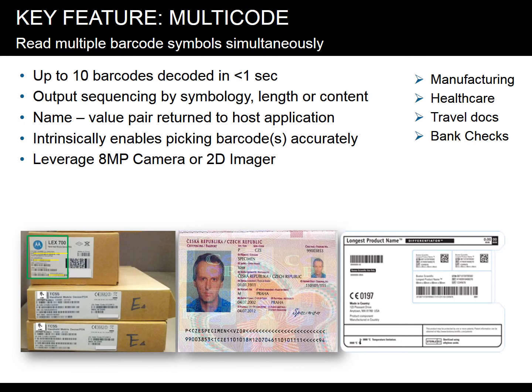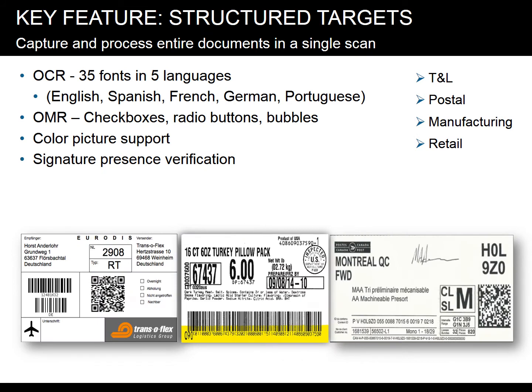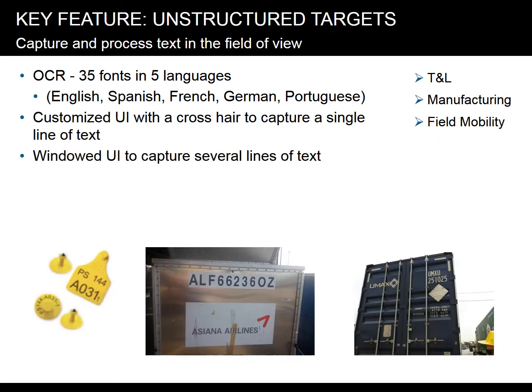One key feature of SimulScan is the ability to read barcode symbols simultaneously, particularly helpful in manufacturing, healthcare, travel documents, and bank checks. Another key feature is structured targets, which allows users to capture and process entire documents in a single scan — particularly useful for transportation and logistics, postal, manufacturing, and retail. Finally, unstructured targets allows users to capture and process text in the field of view, with virtually endless use cases, particularly useful for transportation and logistics, manufacturing, and field mobility applications.